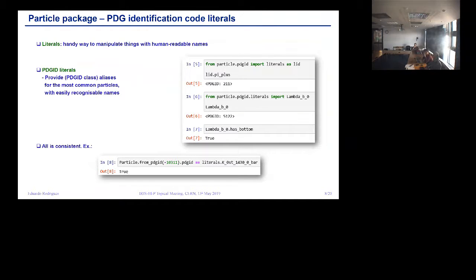All the query functions are also available as standalone functions in the package. There are literals to make it easy to programmatically use in plotting and other contexts. For example, you can get hold of a pi-plus PDG ID, or say 'I have my Lambda B0 literal' and it has charm, bottom, and so on. There's full self-consistency: when you acquire the particle class, there's a full match between the literal PDG ID and the one you get from the data table.